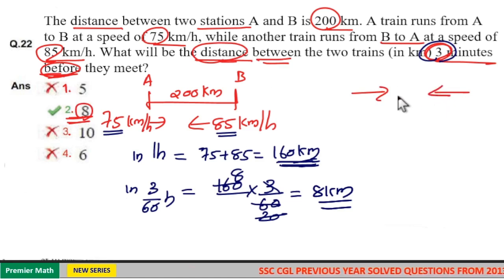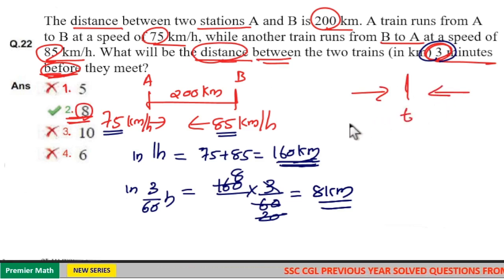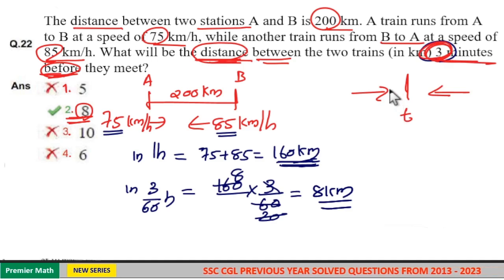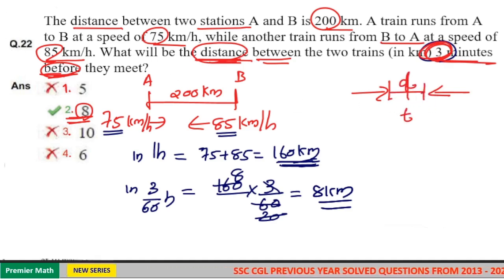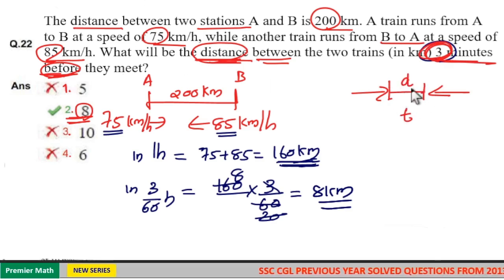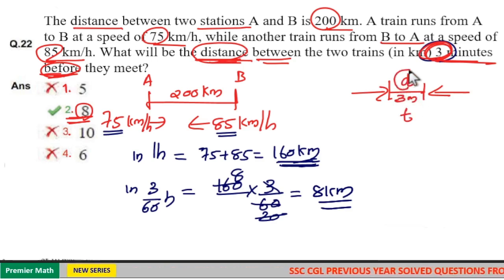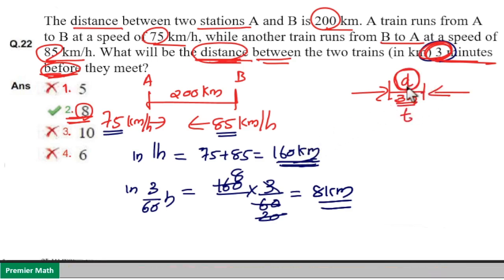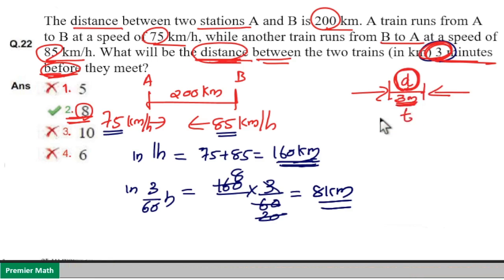Two trains travel in opposite directions and at time T they will meet each other. We have to find the distance between these two trains three minutes before they meet. Consider three minutes before — they are at a distance D. If you find how much distance D they will cover together in three minutes, that is your answer.